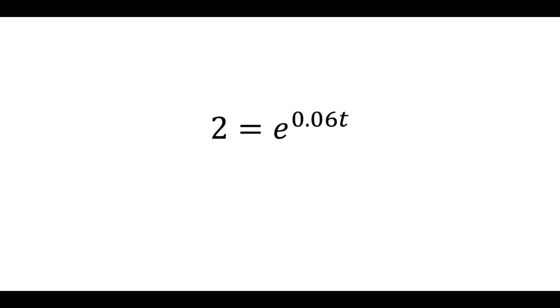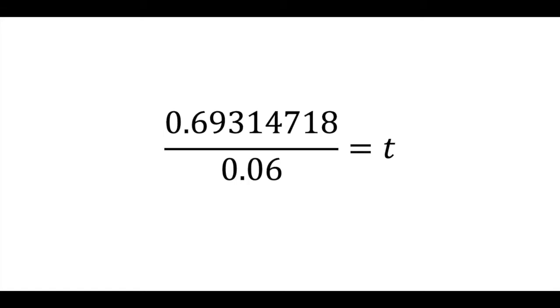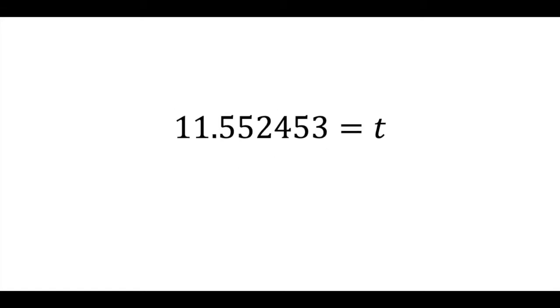We can now set this up as a logarithm. 0.06T equals ln of 2. ln of 2 is about 0.693. Divide that by 0.06 and we find that T equals about 11.55, or 11 years and a bit more than 6.5 months.